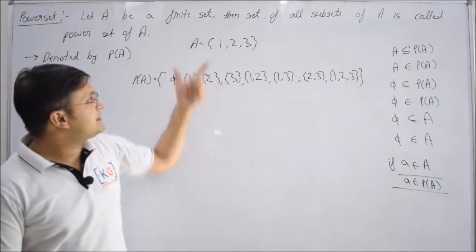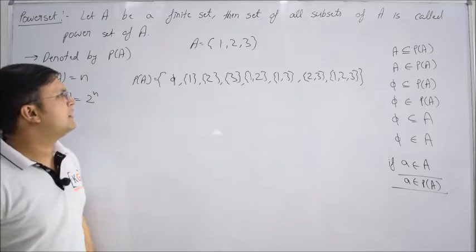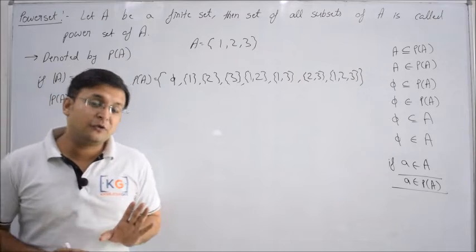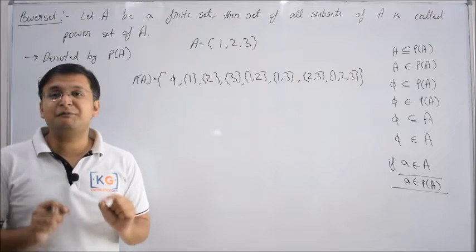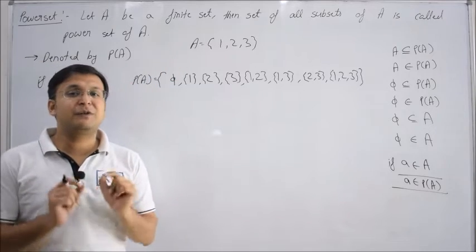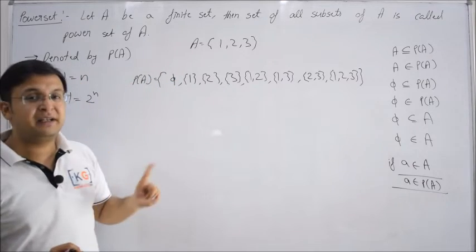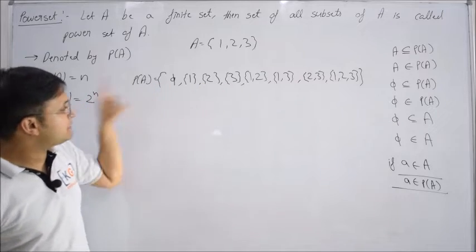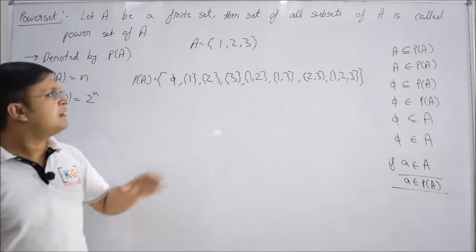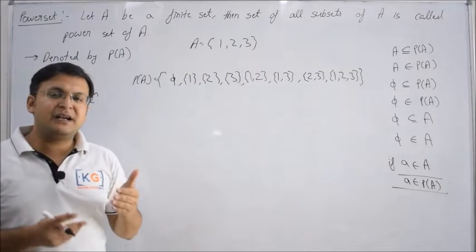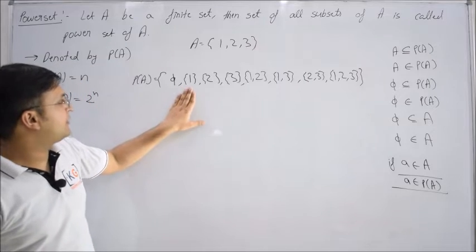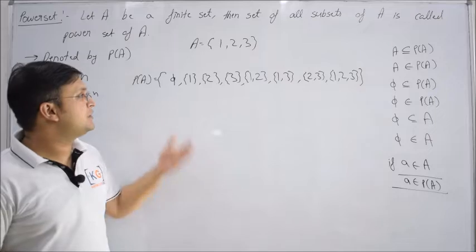A set of all possible subsets. For example, suppose there's a set A which has only 3 elements: 1, 2, 3. How many different subsets are possible? The smallest possible subset is Φ — no matter what set we have, the smallest possible subset is Φ because it does not contain any element. Then, since there are 3 elements, I'll start with sets of 1 element each: {1}, {2}, {3}. Then combinations of 2: {1,2}.